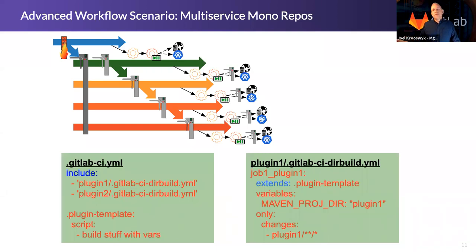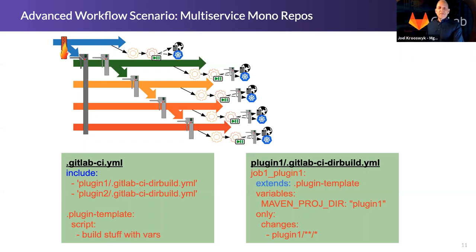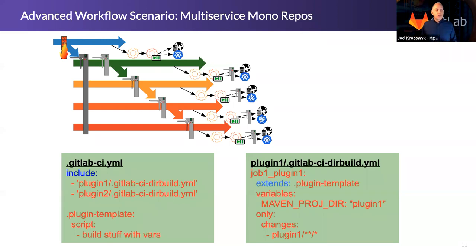A common question is how to make sure pipeline files aren't being changed all the time, and how to lock them down in a regulated environment. Today you can use the code owners file and file locking — the YAML file is locked and only alterable by people listed in the code owners file. Coming soon is specific functionality to lock down pipelines to only admin and maintainer roles, ensuring pipeline jobs aren't tampered with and enabling audit compliance.